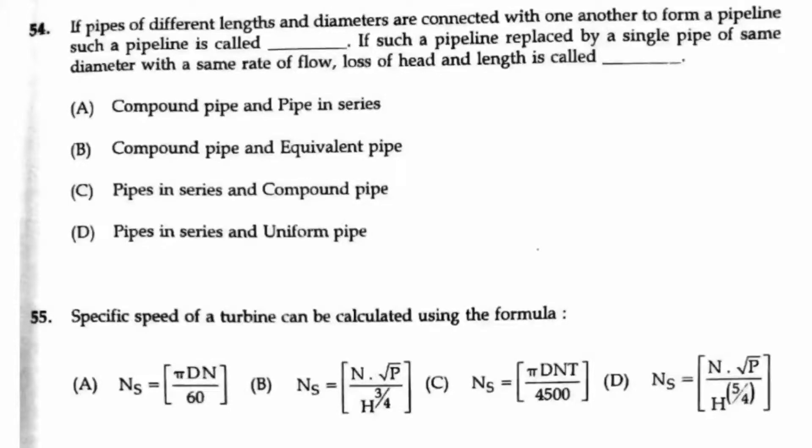So it will be either option A or option B. In the next line, if you see if such a pipeline is replaced by a single pipeline of same diameter with the same rate of flow, loss of head and length.